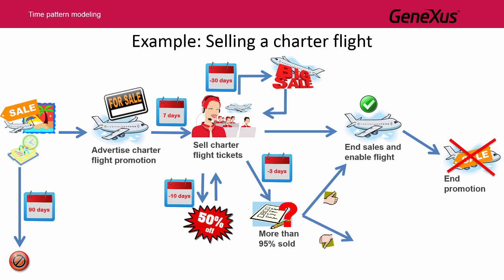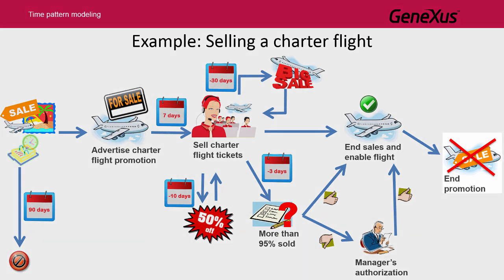If less than 95% of the flight tickets have been sold, an authorization from the travel agency management is requested to confirm whether the flight will depart or be cancelled due to not meeting the objective of selling most of the seats available. Once the flight is authorized, it's enabled, the promotion is removed, and the process is ended. If the travel agency management doesn't authorize the flight, the promotion is removed and the process is ended.